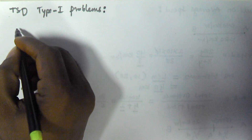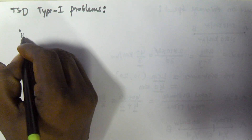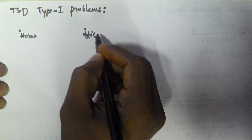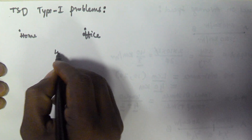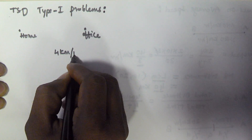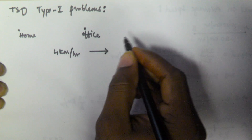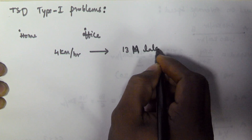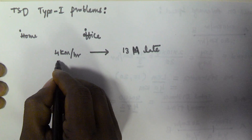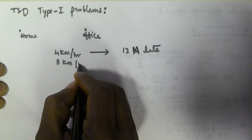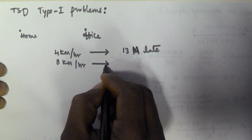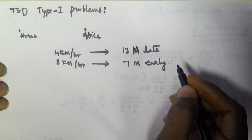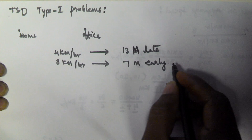Assume a person is travelling from his home to office. On the first day, he travelled with 4 km per hour and reached office 13 minutes late. On the second day, he travelled with 8 km per hour and reached 7 minutes early. Find the distance between his home and office.